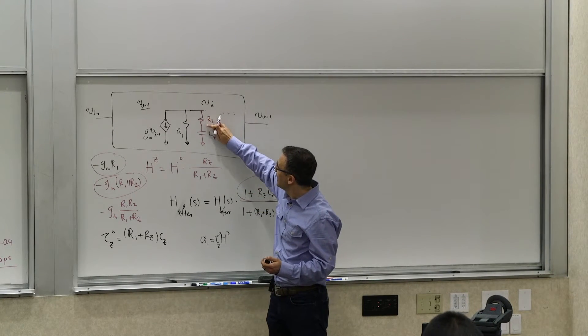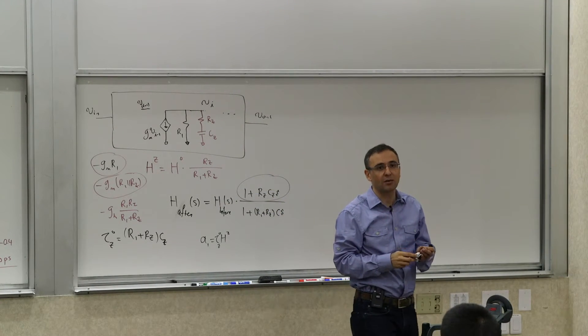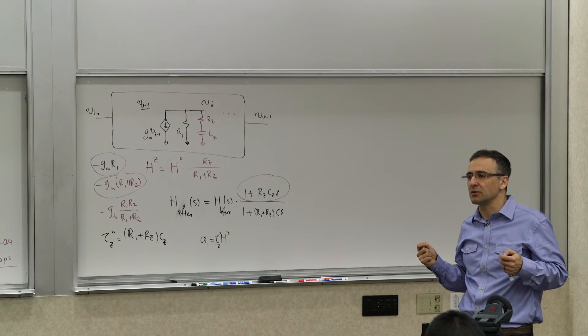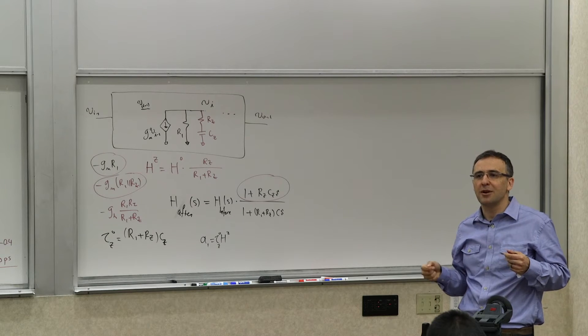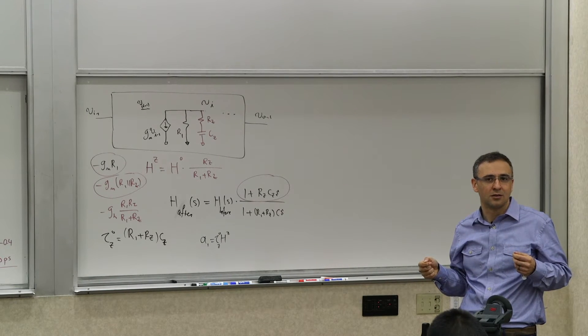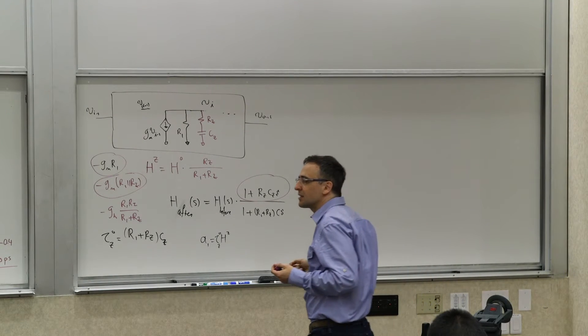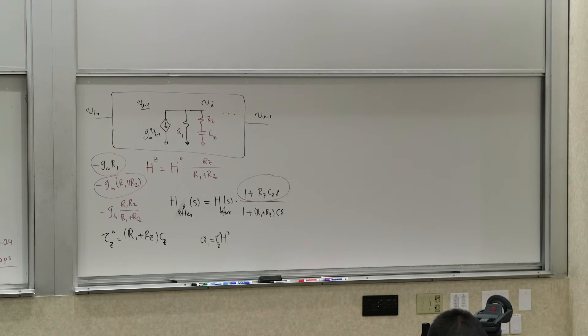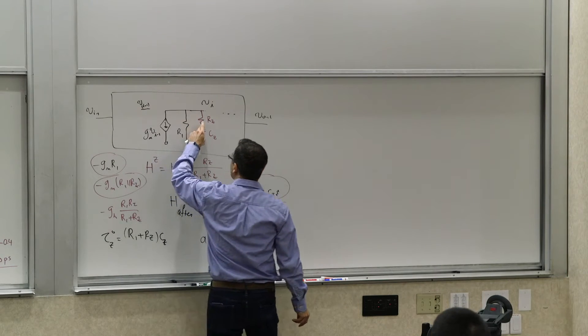So the introduction of this branch introduced what? A zero at exactly the frequency of the time constant of these two. This is one standard way of introducing a zero in the transfer function. A parallel branch to ground, right? That carries a current.